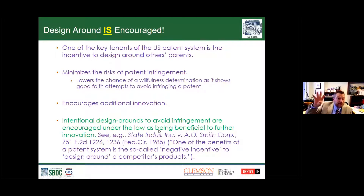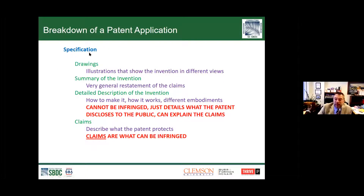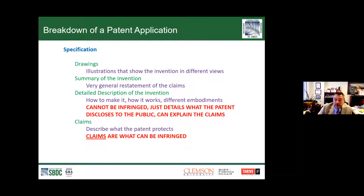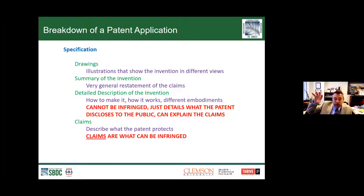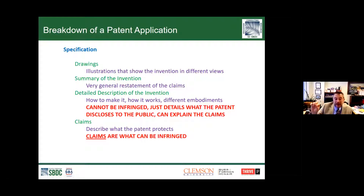Intentional design-arounds are here to avoid infringement, and they're beneficial because they call you to think of a way to redesign something. Now, when we talk about the spec of the patent—the drawings show you what it's like, the summary of the invention is a very general restatement of claims in plain English. Don't try to use those in your design-around. That detailed description? Many people see something in a detailed description and think they can't do that for their device—that's entirely wrong. The detailed description is just advertising for how the patent works.